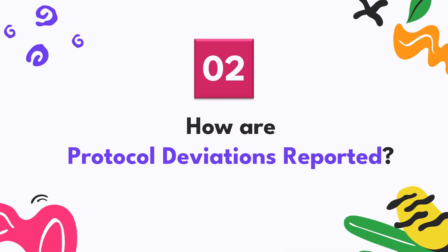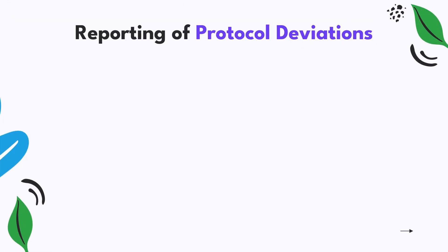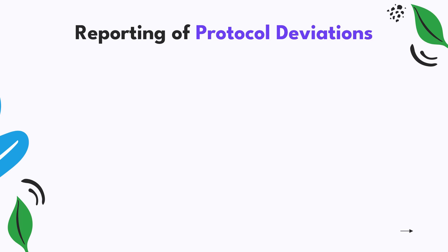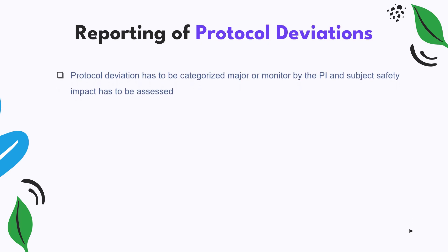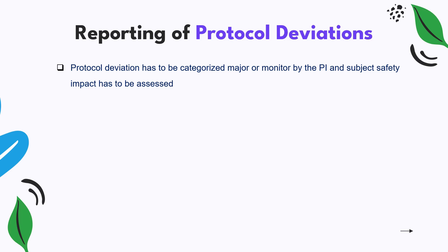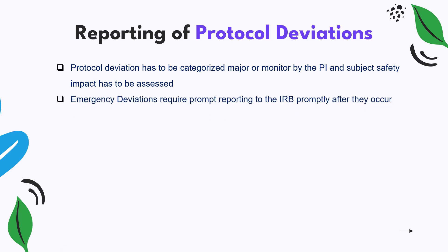Now let us look at how exactly to report a protocol deviation. Protocol deviations can be identified by you whenever you conduct a visit — for example, an outside-window-period visit — or when the subject informs you of a safety event they did not notify you about, or if you forget disposition of investigational product. Deviations can also be identified by the CRA during a site monitoring visit. Protocol deviations are categorized as major or minor by the principal investigator, who also assesses the impact on subject safety. Emergency deviations requiring IRB reporting should be done immediately to ensure subject safety.